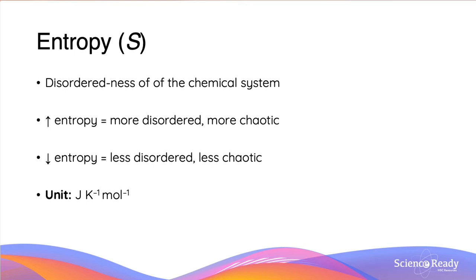Entropy is often described as being a measure of chaos — in essence, the disorderedness of a chemical system. If we have an increase in entropy, we would say that the system is becoming more disordered or more chaotic, and if we decrease entropy, we call it less disordered and less chaotic.